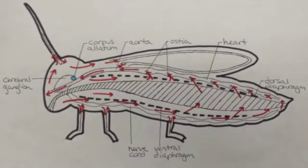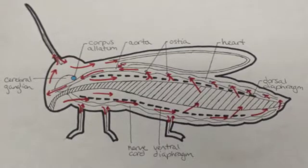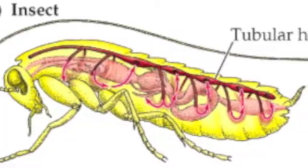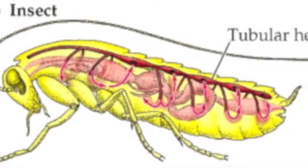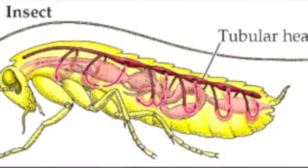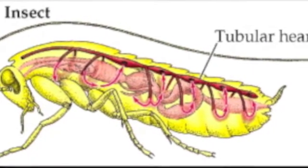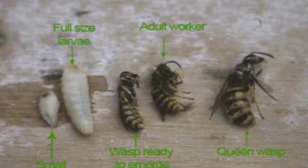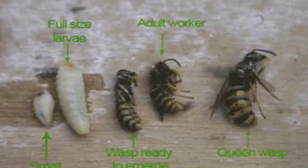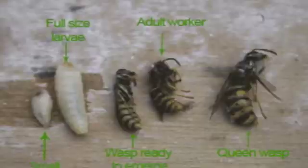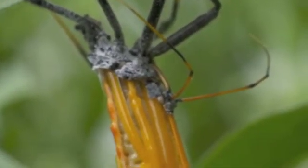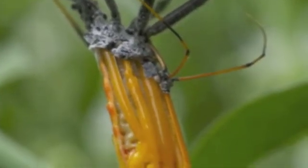Once the Corpora Allata produces Juvenile Hormone, it is spread throughout the insect's body in the hemolymph and circulated through the entire insect and into all the cells. The maintenance of status quo in larvae by Juvenile Hormone involves both the programming of the ecdysteroid-dependent synthesis during the molt and the suppression of morphogenetic growth during the intermolt.